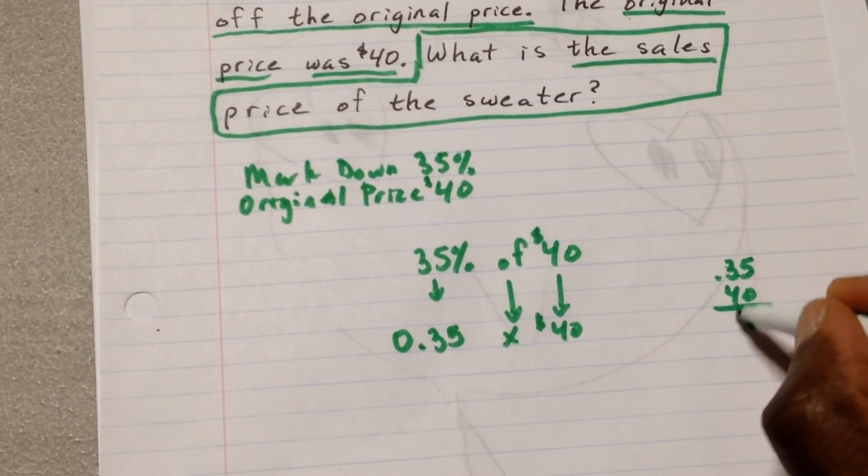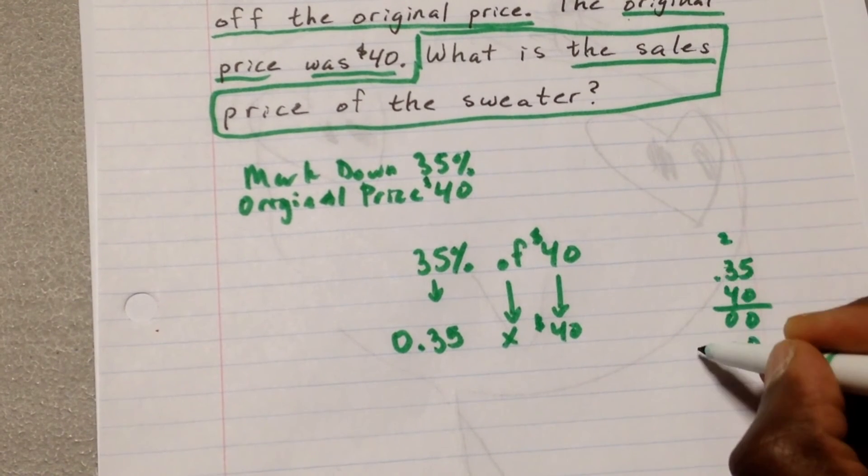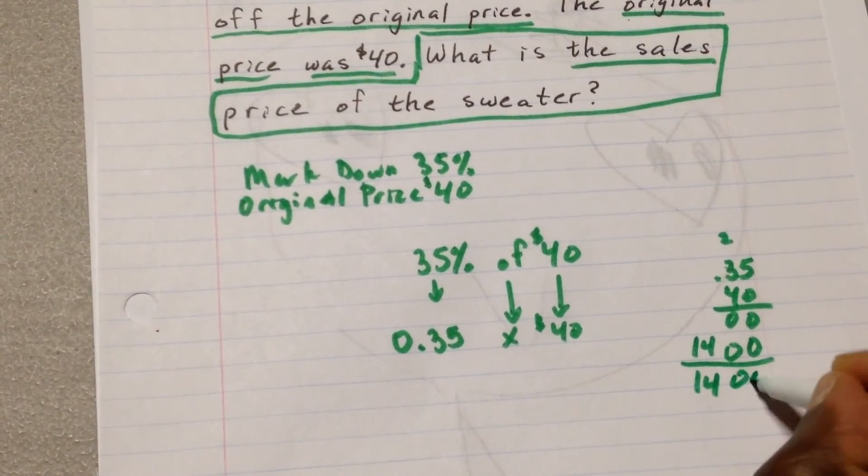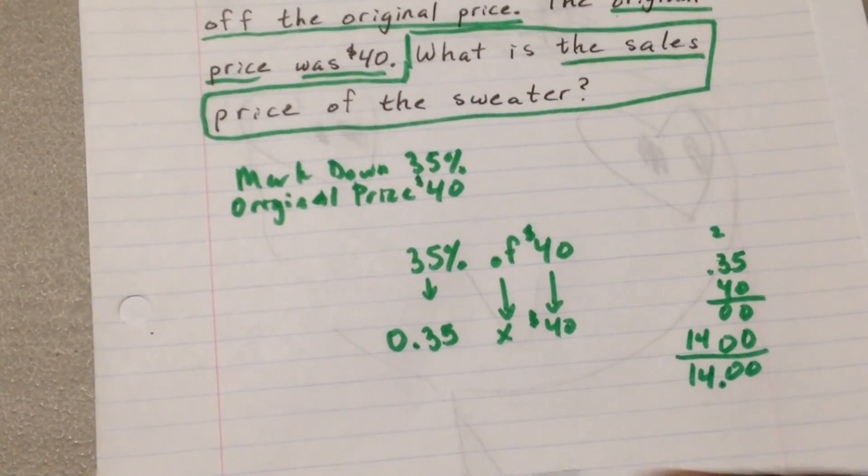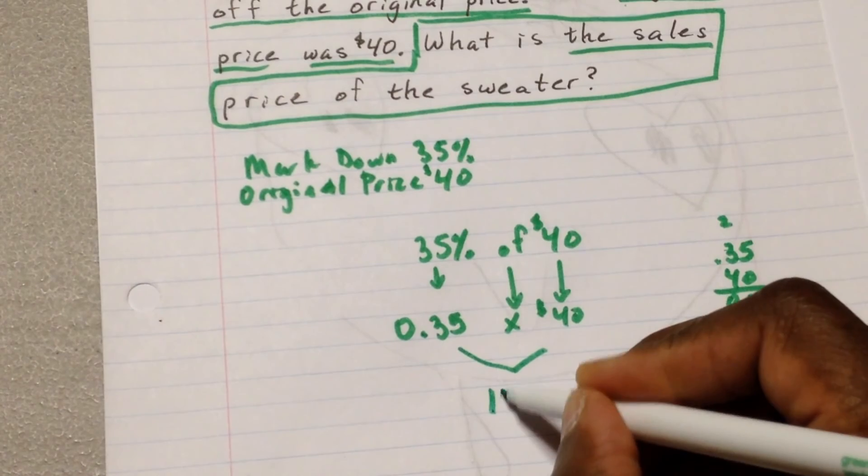It's going to be 0, 0, put a 0 to hold the place. That would be 0, 20, carry the 2. So it's going to be, move the decimal two spaces, which will come out to $14. So right now, this will not come to $14.